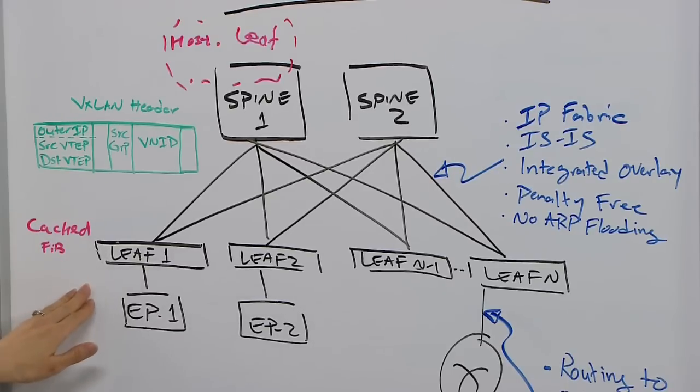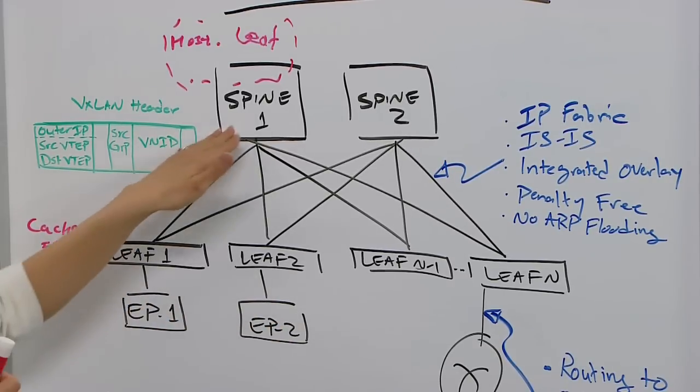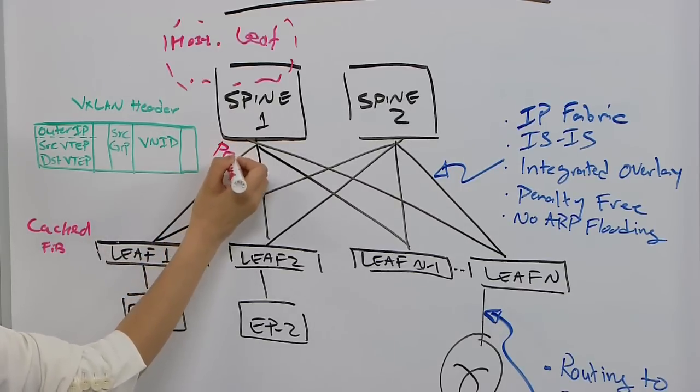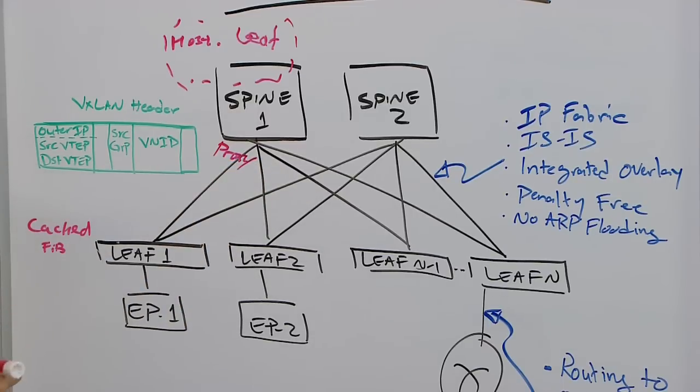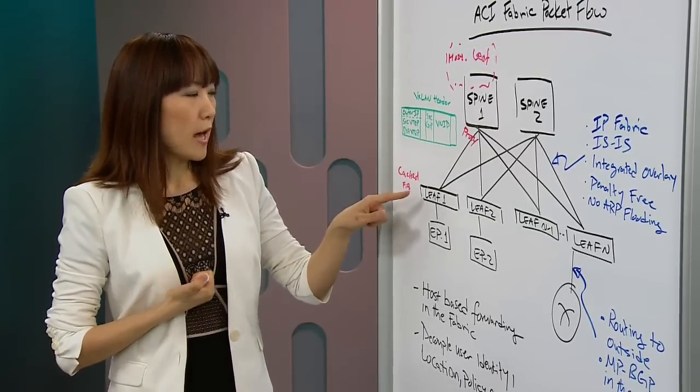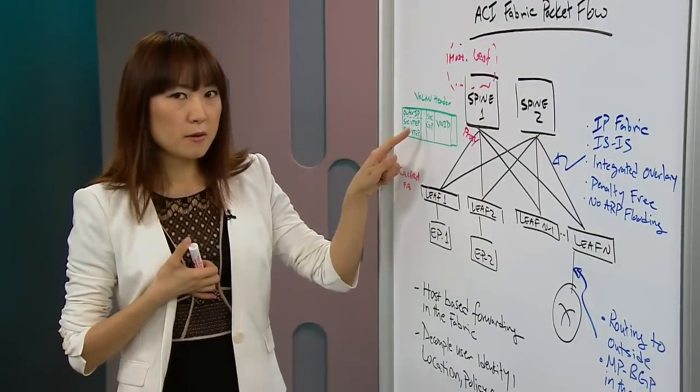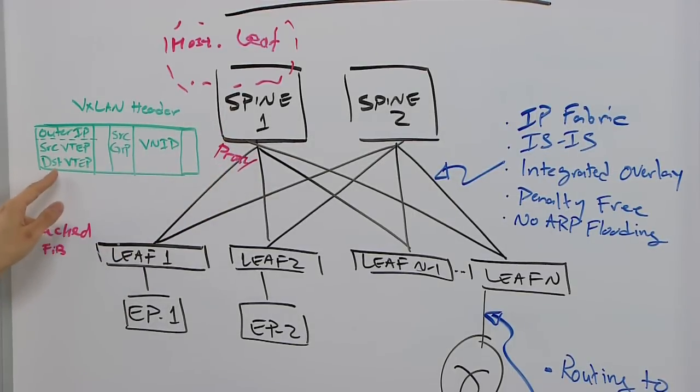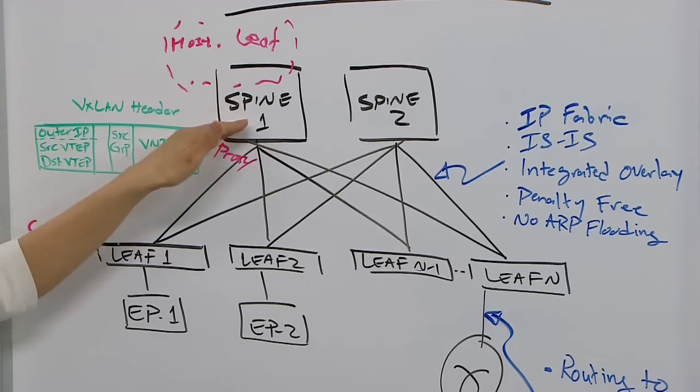If leaf 1 doesn't have the information about destination, it's going to use SPINE as proxy. It's going to encapsulate the packets into VXLAN header using its own VTEP as a source VTEP, but it's going to use a SPINE proxy VTEP IP address as a destination VTEP. So the packets will be sent onto SPINE nodes.